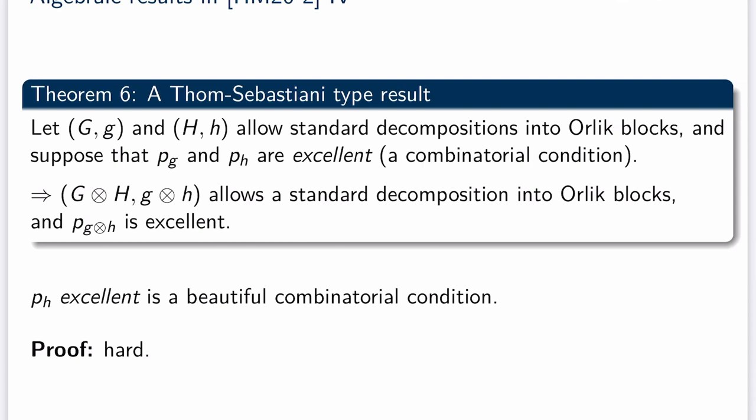This theorem is a step towards the next theorem, which we apply in the singularity case: a Tom-Sebastiani type result. We start with two lattices with automorphisms (G, g) and (H, h), both allowing standard decompositions into Orlik blocks, and ask when their tensor product again allows a standard decomposition into Orlik blocks. A sufficient condition is that the characteristic polynomials of g and h are both excellent — a precise combinatorial condition. We do not expect this condition is necessary, but we know it is sufficient. We will consider Tom-Sebastiani sums of singularities and prove that if two singularities satisfy Orlik's conjecture, then the sum also satisfies Orlik's conjecture.